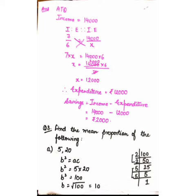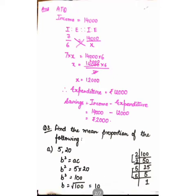Savings = Income − Expenditure. Income is given as Rs. 14,000 and we have found the expenditure to be Rs. 12,000. So, 14,000 − 12,000 = Rs. 2,000. Therefore savings = Rs. 2,000.